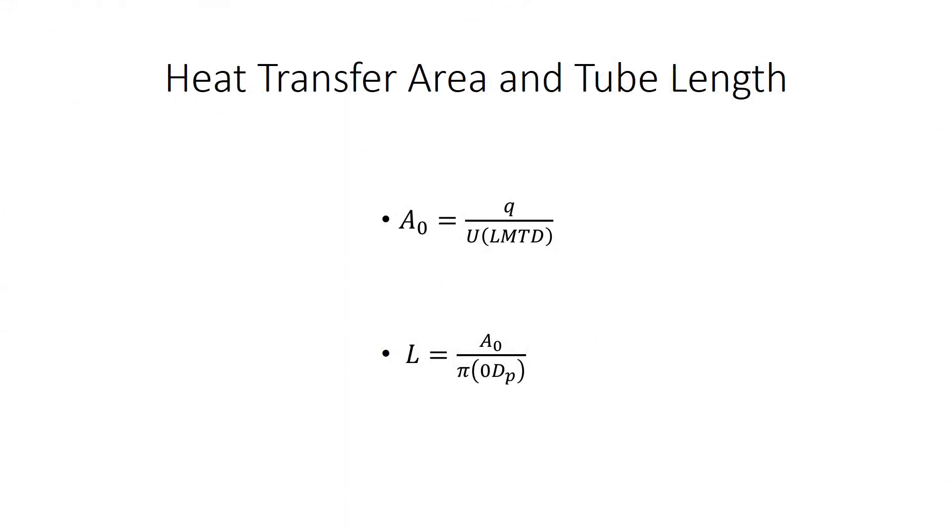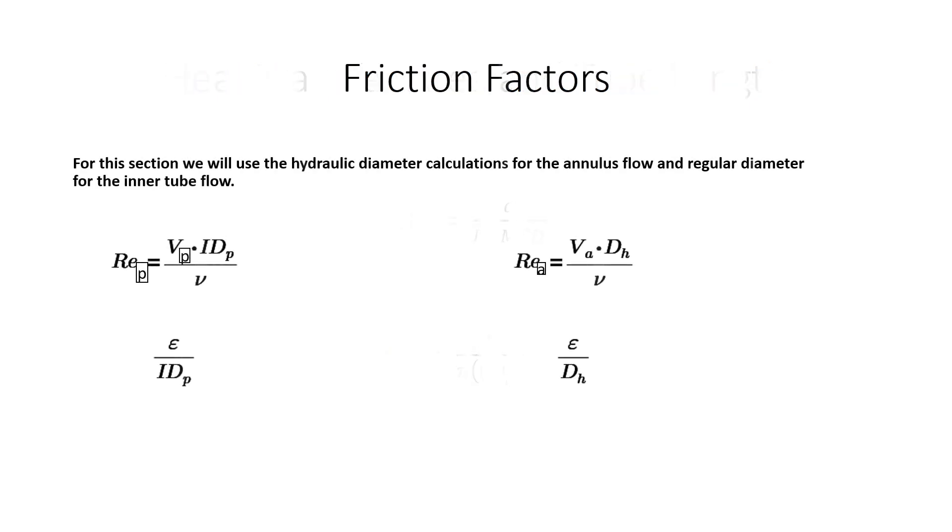Now to find the heat transfer area and the tube length, you can do that by doing simple algebra on the heat transfer equation to solve for area. With the area known, now you can find the length of the tube by dividing the area by pi times the outside diameter, and that will give you the length of the tube.